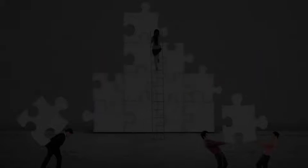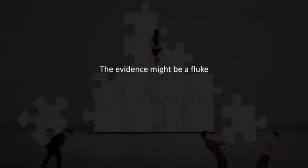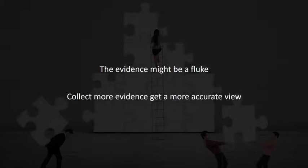As Fritz Moscher states, the evidence might be a fluke, suggesting that students don't understand something that they do, or the reverse — suggesting that students do fully understand what they don't. When teachers doubt the accuracy of the evidence based on their prior work with students, they will need to collect additional evidence. The combined evidence provides a more accurate view of where students are in their learning.